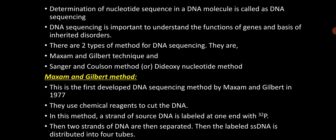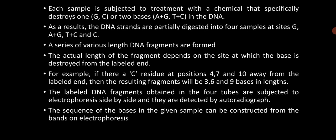After labelling, the DNA must be separated. The labelled single-strand DNA, labelled with radioactive isotope, should be taken in four test tubes. Each sample is subjected to treatment with a chemical that specifically destroys one of the bases — either guanine, or cytosine, or two bases that is both adenine and guanine. One chemical will make a cleavage where the adenine and guanine residue is present in the DNA.